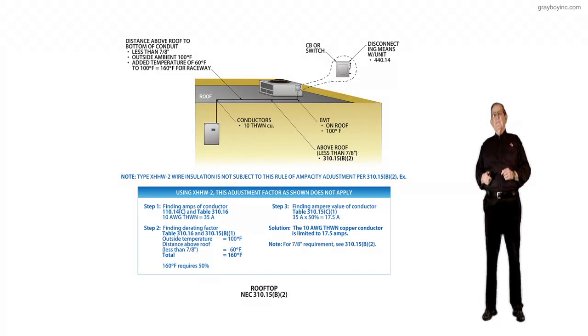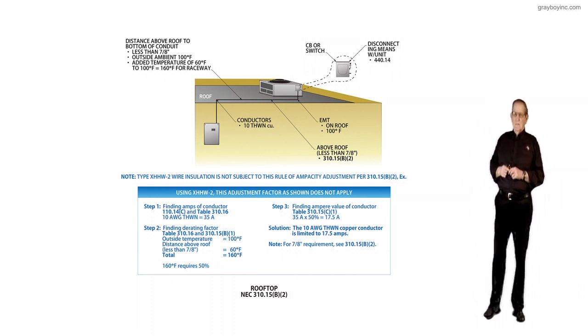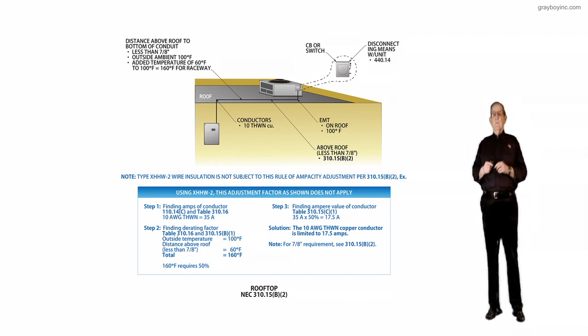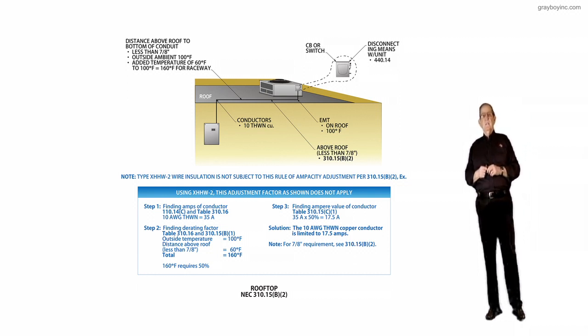This illustration deals with rooftop-type installations and NEC 310.15B as in BOI 2. The purpose of the change is that tables 310.15B1 and B2 have been relocated from 310.15B2A and B in the 2017 NEC.